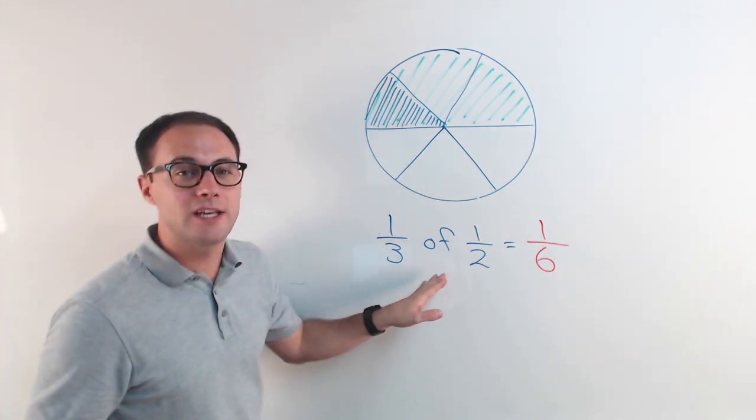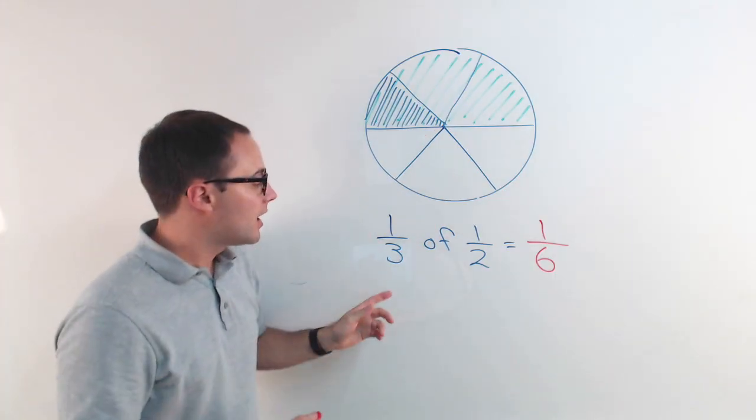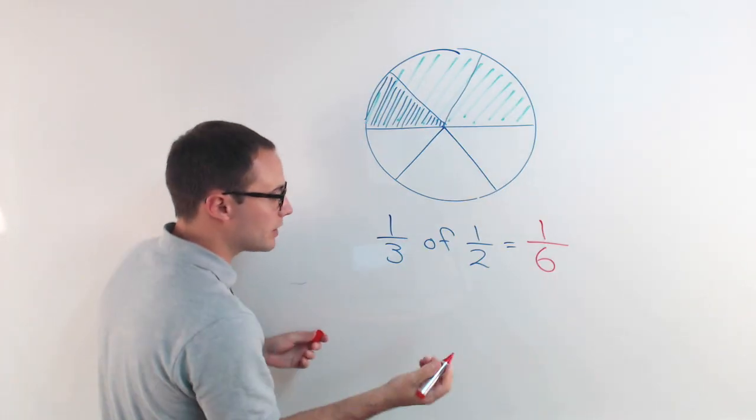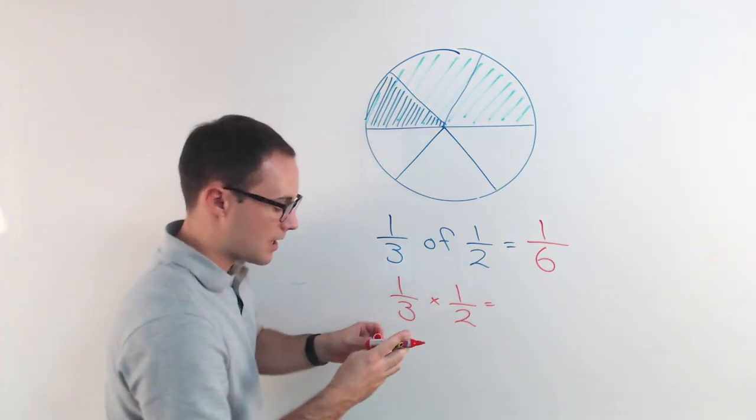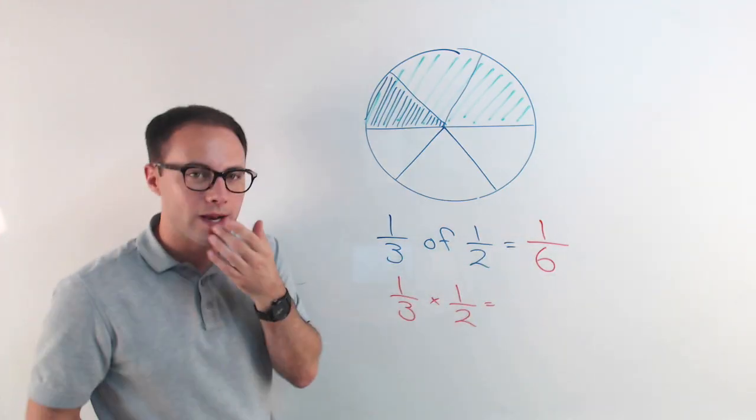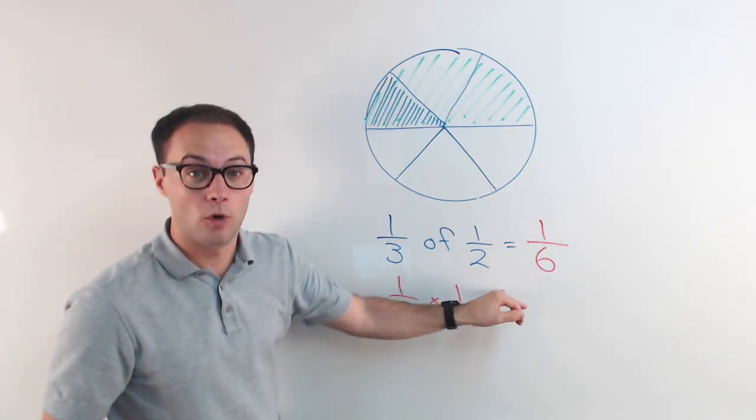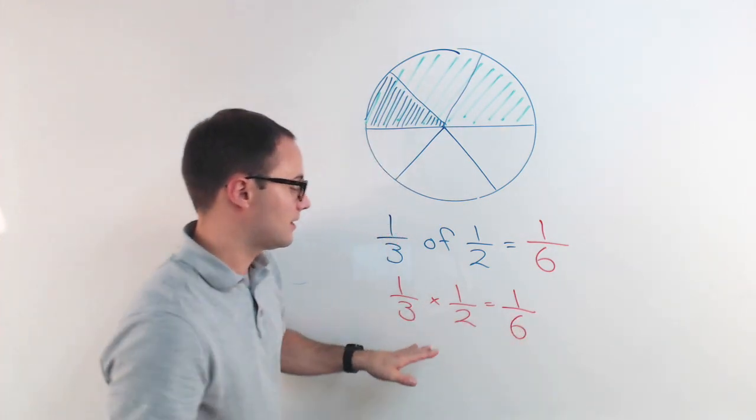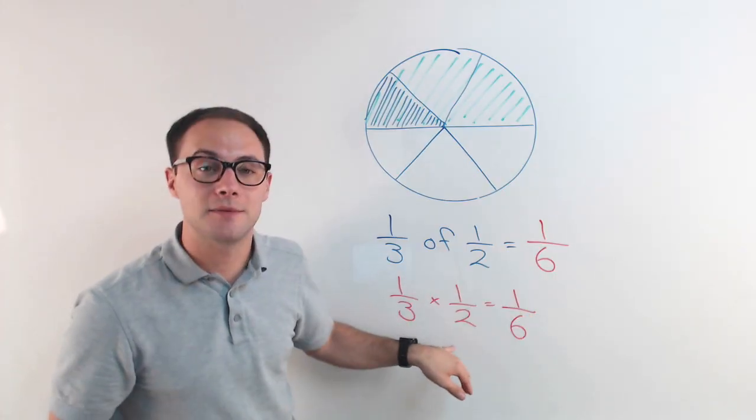Now let's look at how could we actually get there with just the math without actually drawing a picture. If you remember, 'of' in word problems means multiplication. So I can rewrite this as one third times one half. And we know it's got to be one-sixth. Well one times one is one and three times two is six. So if you notice all we had to do was multiply straight across. Numerator times numerator and denominator times denominator.